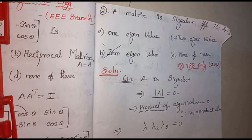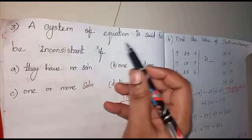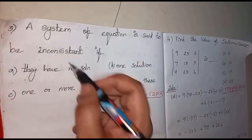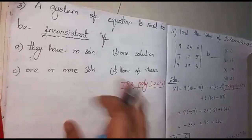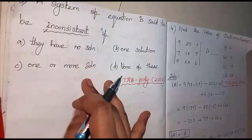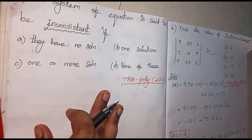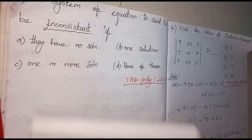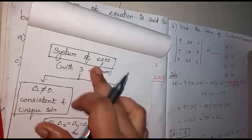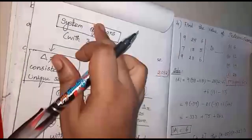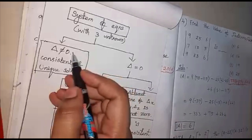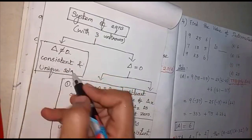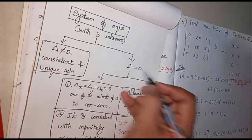The next question is: a system of equations is said to be inconsistent if — it has no solution, one solution, or one or more solutions? We look at the details for a system of equations with three unknowns. If the determinant value is not equal to 0, it is consistent with a unique solution. If the determinant equals 0, there are two cases.